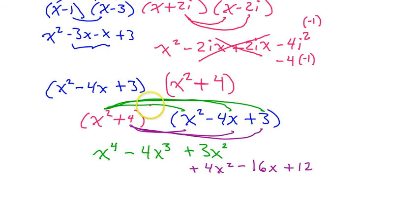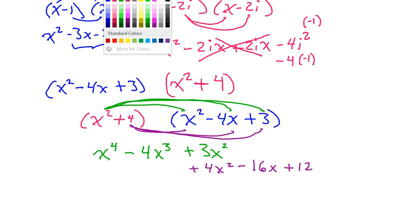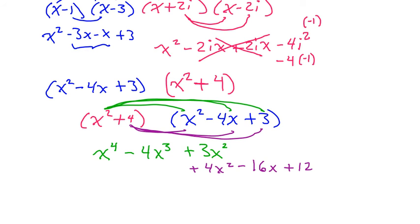All that's left is to combine these like terms. So I'll have x to the fourth power minus 4x to the third power plus 7x squared. And then minus 16x plus 12.